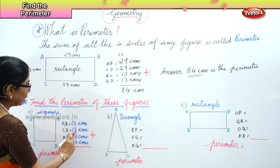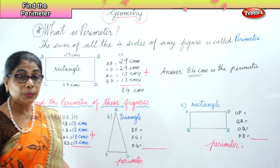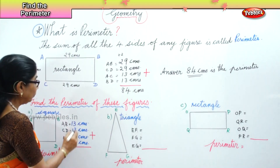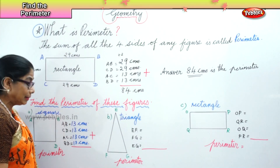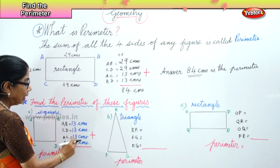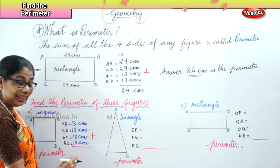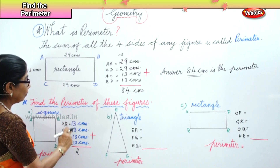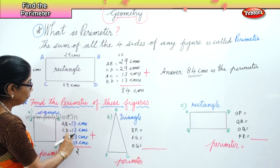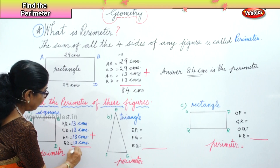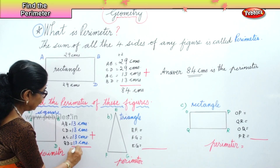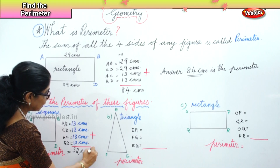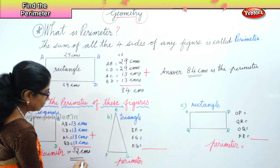Add all four sides. Now let's add: 3 plus 3 is 6, 6 plus 3 is 9, 9 plus 3 is 12. You put 2 here plus 1, giving 1, 2, 3, 4, 5. So our perimeter is equal to 52 centimetres. This is our answer.